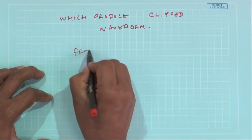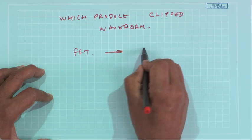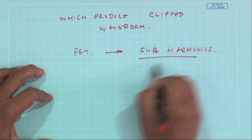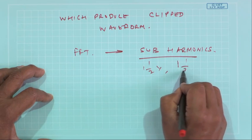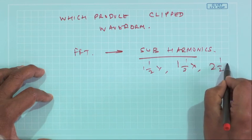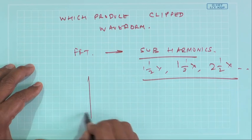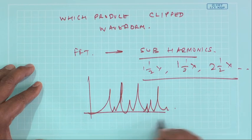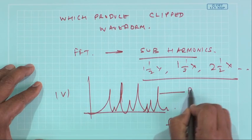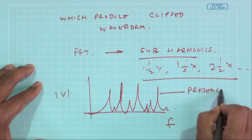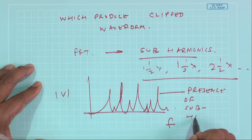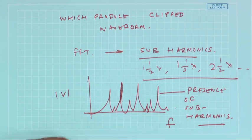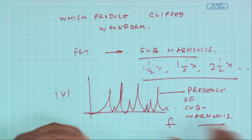If you do an FFT of a clipped waveform, you will actually see lot of sub harmonics: 1x, 1.5x, 2x, 3x etcetera. These are telltale signs. Lot of sub harmonics will be created, and these are telltale signs of signals where there is lot of looseness in the system.